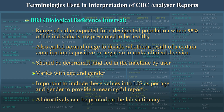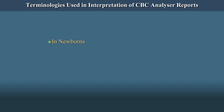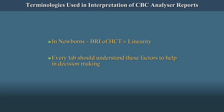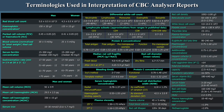Alternatively, these can be printed on the lab stationery. In the newborn age group, the BRI — that is, the Biological Reference Interval — exceeds the linearity of the equipment. Every lab should understand these factors to help in decision making. Please go through the chart shown on the screen for the normal ranges from the reference book of hematology, Dacie and Lewis.